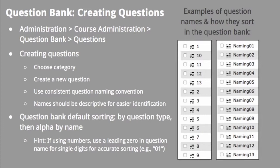In addition to category creation and organization, naming of the individual questions plays an important role. Question creators should name the question using unique information as appropriate to their content. Note that if a quiz question number is included in the question name, include a leading zero for numbers 1 through 9 to have the questions sorted accurately. Once questions have been added to a category in the question bank, questions are automatically sorted by question type and then alphabetically by question name.